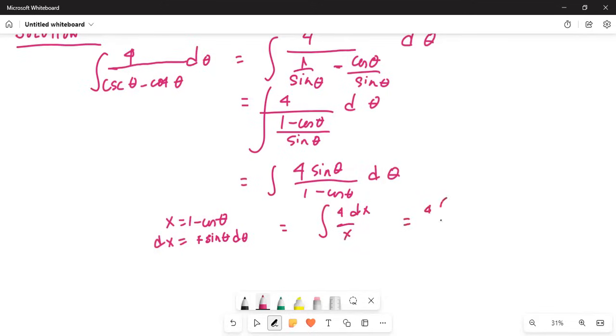Which equals 4 times the integral of 1 over x dx, which equals 4 times ln of the absolute value of x.